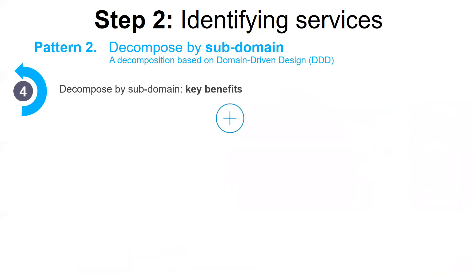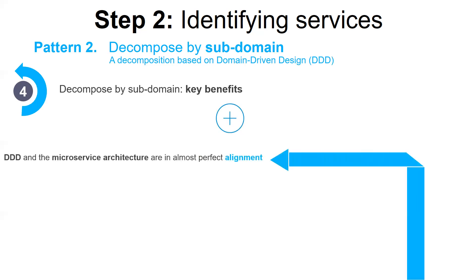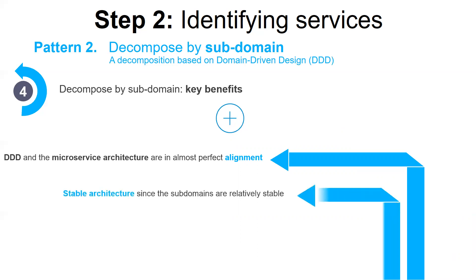DDD and the microservice architecture are in almost perfect alignment. The DDD concept of subdomains and bounded contexts maps nicely to services within a microservice architecture. The microservice architecture's concept of autonomous teams owning services is completely aligned with DDD's concept of each domain model being owned and developed by a single team. Even better, the concept of a subdomain with its own domain model is a great way to eliminate big and overloaded classes, making composition easier. Another advantage of using subdomains is the stability they add to the architecture, in addition to resulting services which are cohesive and loosely coupled.